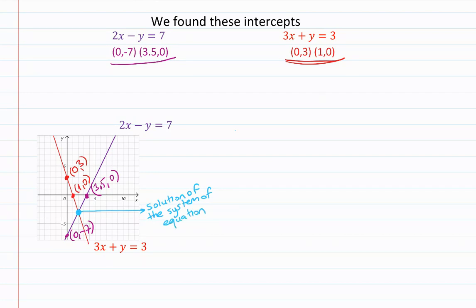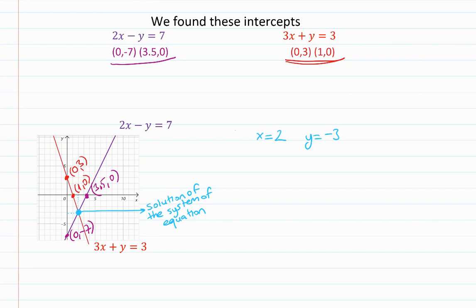This blue point satisfies both equations. When you substitute it into the purple or red equation, it will satisfy both. Reading from the graph, the solution is x equals 2 and y equals negative 3.